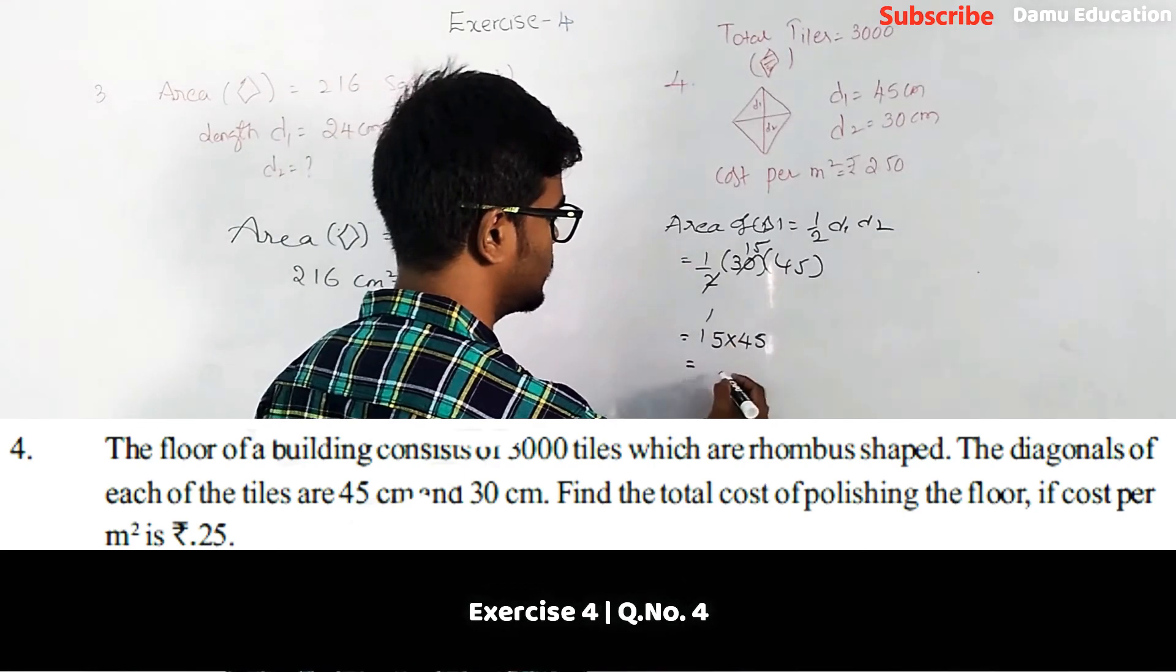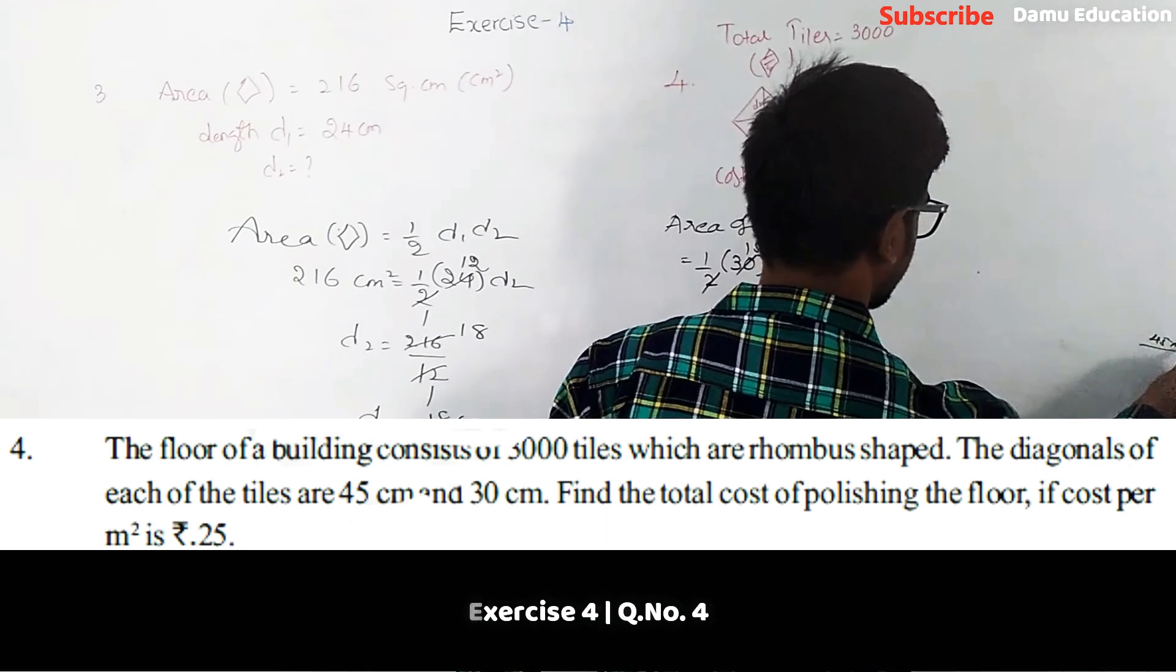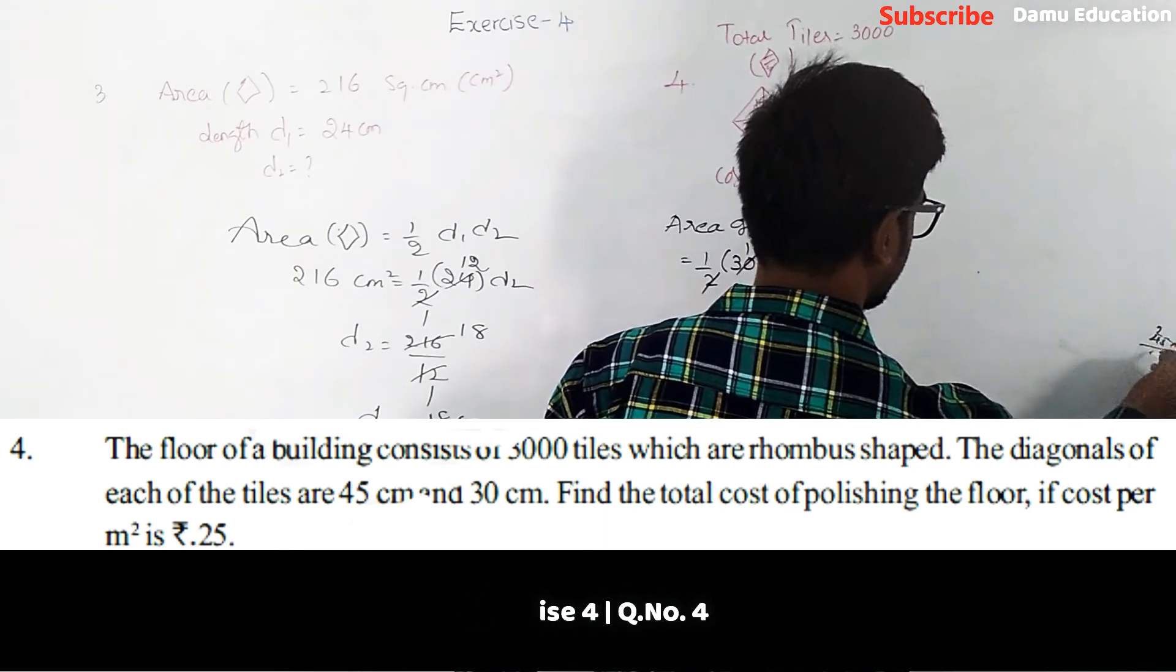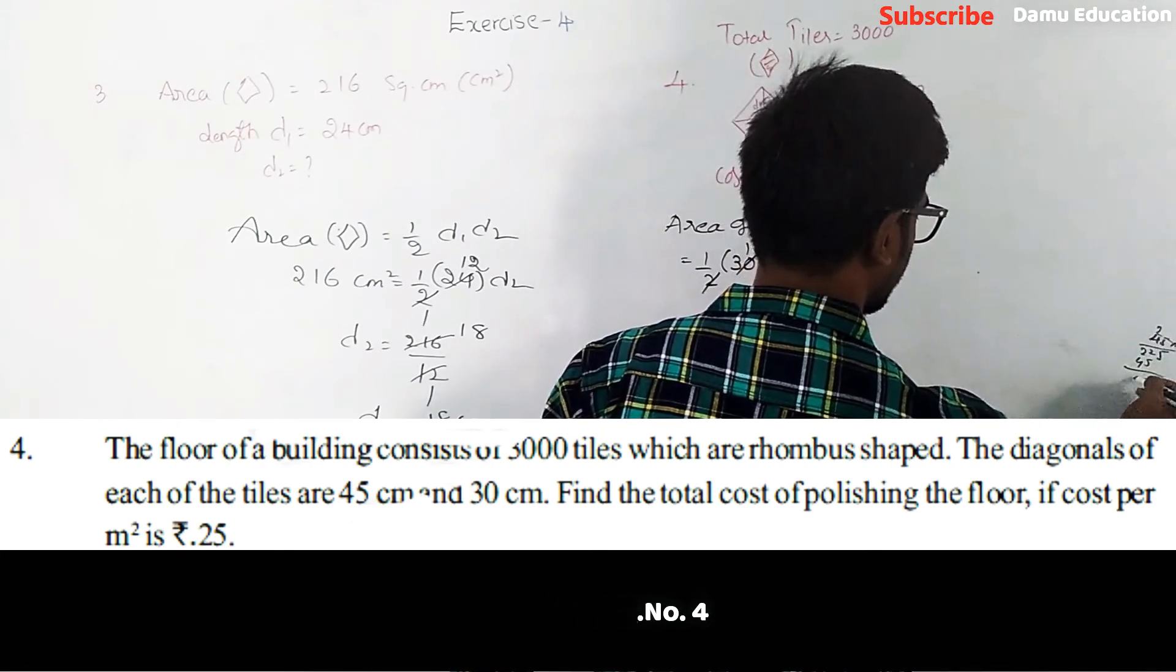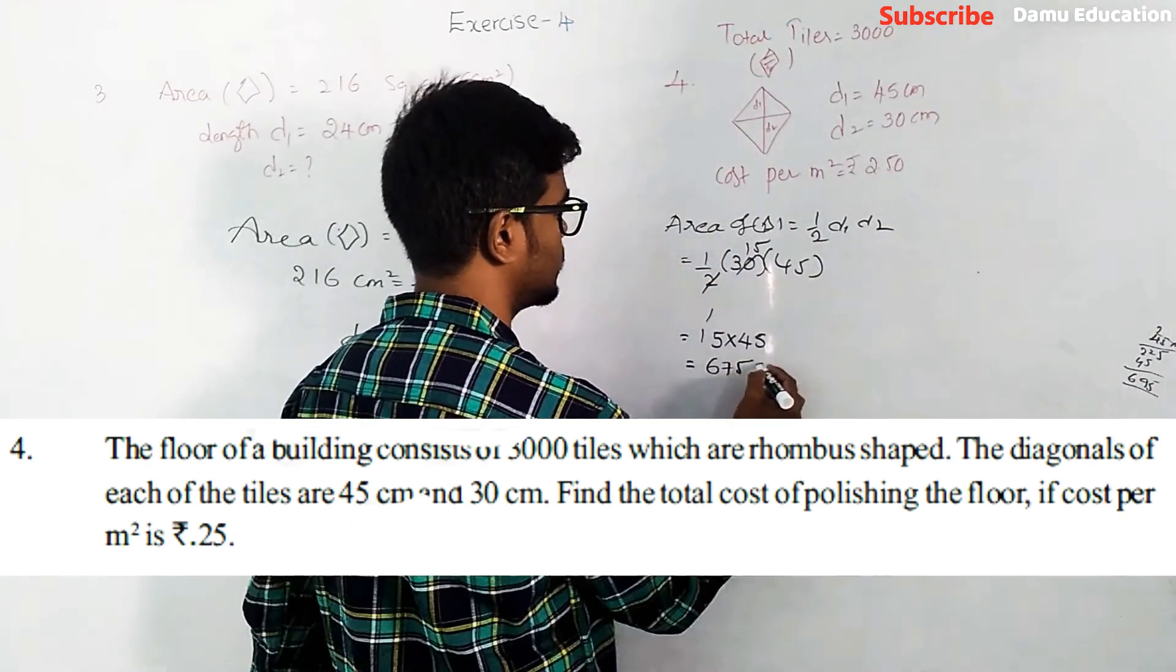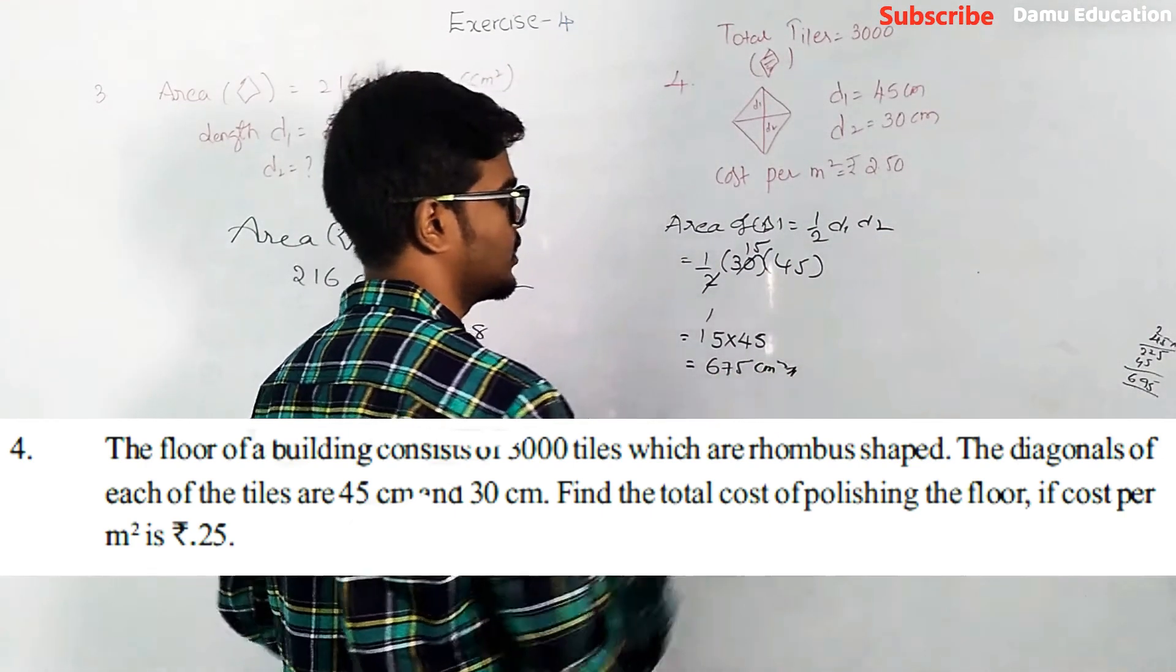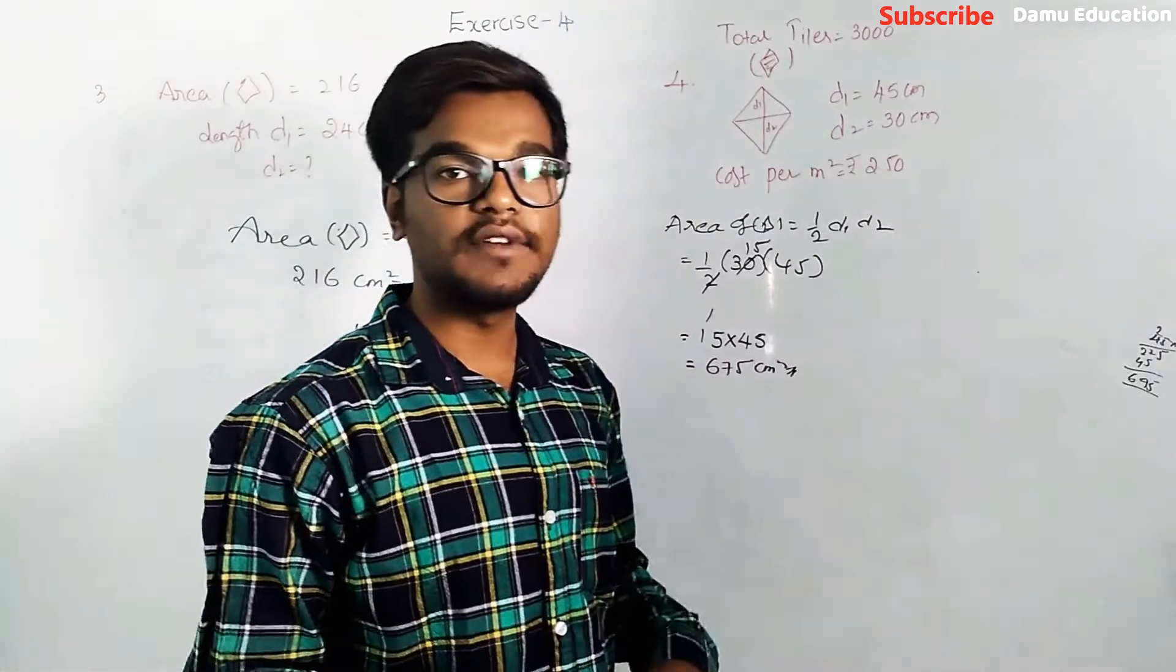45 into 15, so this is 675 centimeters square. So area of each tile we got as 675 centimeter square.